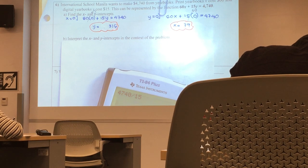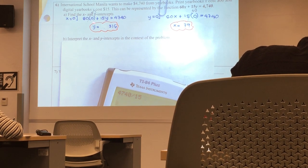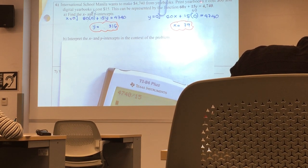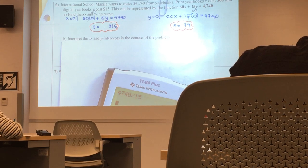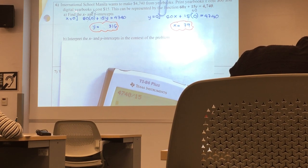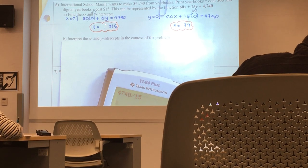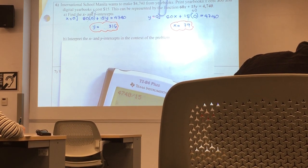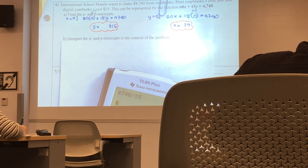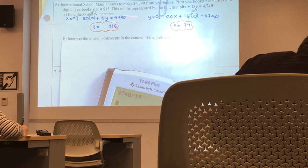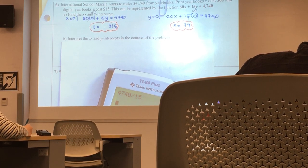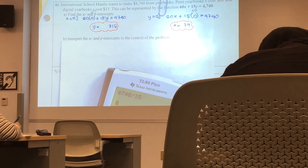And then y is the digital. Therefore, we say here, how do we interpret this one? When we do not produce print yearbooks, we do have 316 digital yearbooks. Here, when we don't print digital yearbooks, how many print yearbooks do we have? Done. That's it.